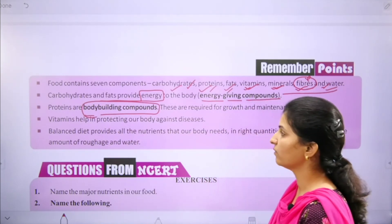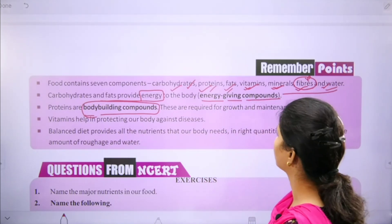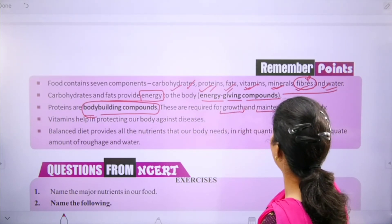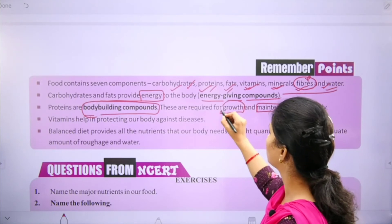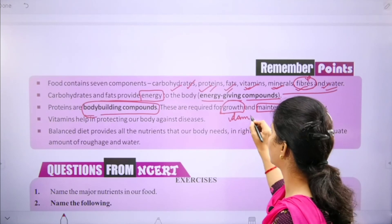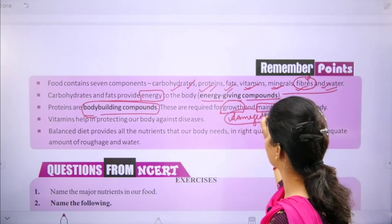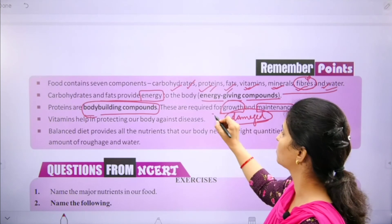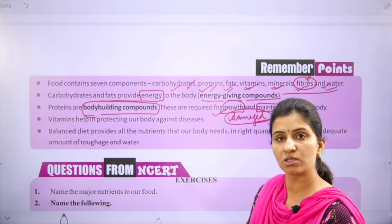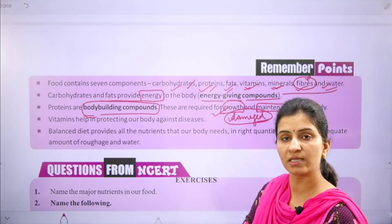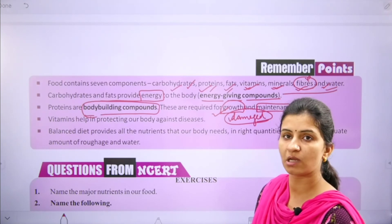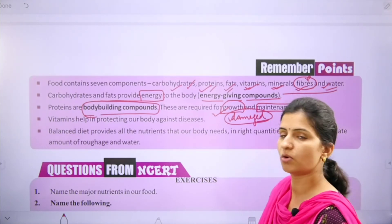Protein is needed for body building and consumption. Protein is needed for growth and maintenance. If we have damaged tissues, proteins play a very important role in repair. Many cells die and new cells are formed, so if any cell is dead or damaged, proteins play a role.